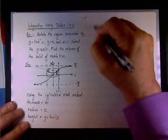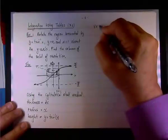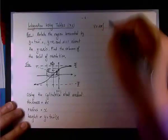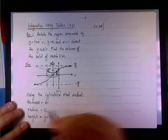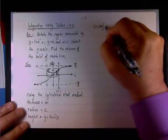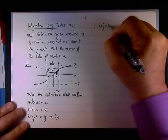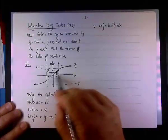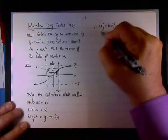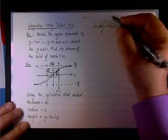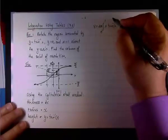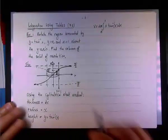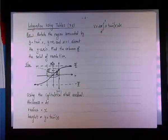In case you forgot, the thickness will be dx, the radius will be x, and the height will be y equals inverse tangent of x, the function itself. So the volume will be 2 pi times the integral of the radius times the height, x times the inverse tangent of x dx. Now we evaluate x from 0 to 1, right?